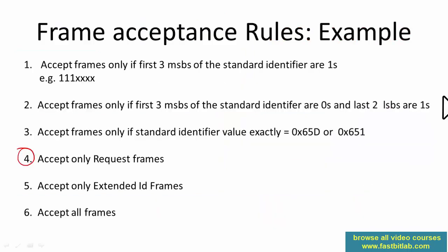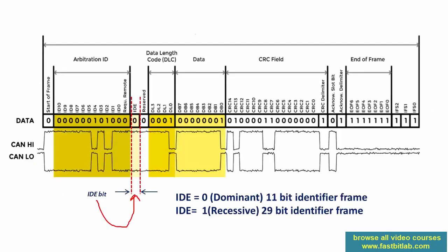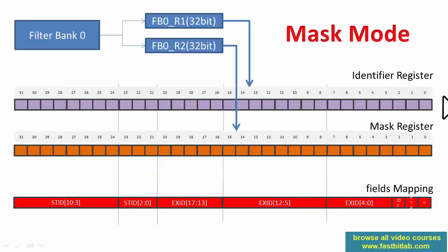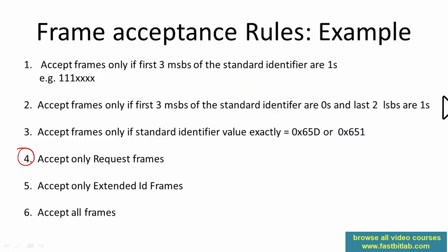To accept only extended ID frames, recall that in CAN protocol the IDE bit (ID extension) is dominant for 11-bit identifier frames and recessive for 29-bit identifier frames. In mask mode, enable the IDE field for checking by setting the IDE bit in the mask register to one, then set the corresponding identifier register bit to one (recessive). All other fields can remain zero for this use case.